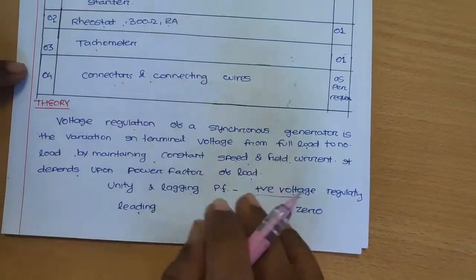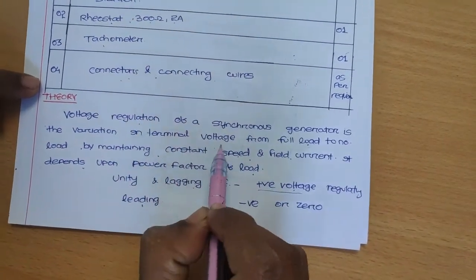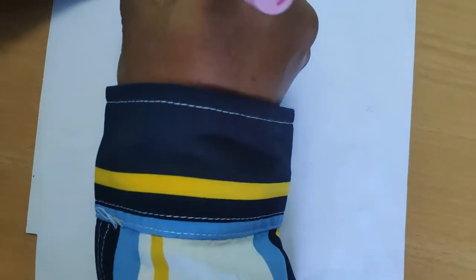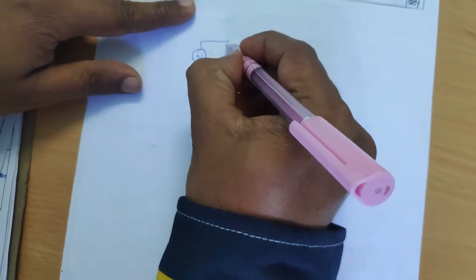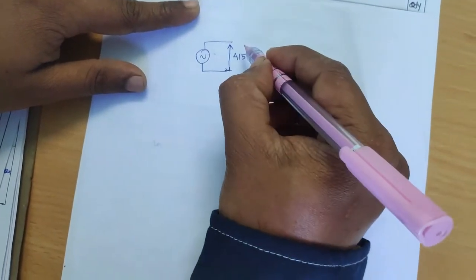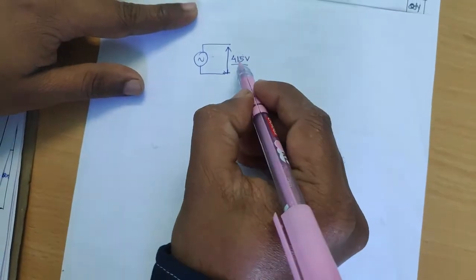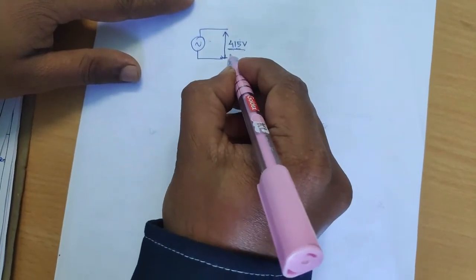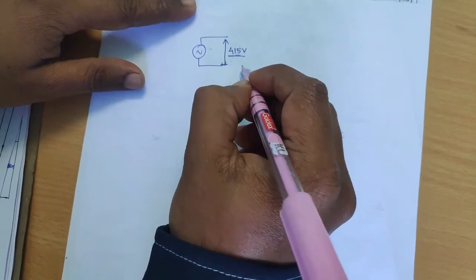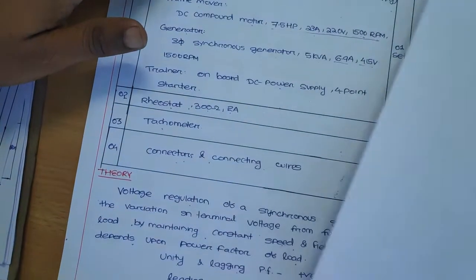Let's go into the theory in depth. First, you should know what the voltage regulation of a synchronous generator is. Voltage regulation of a synchronous generator is the variation in terminal voltage from full load to no load by maintaining constant speed and field current. Suppose rated voltage is 415 V when fully loaded — when this load is thrown off, the voltage will obviously increase or decrease depending upon the power factor. The no-load voltage is during the absence of load, and the rated voltage is during the presence of rated load condition at the output of the synchronous generator.